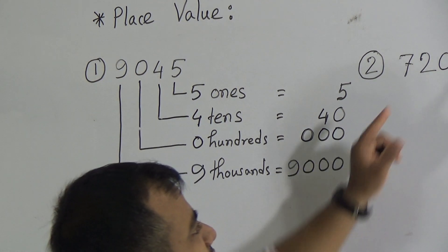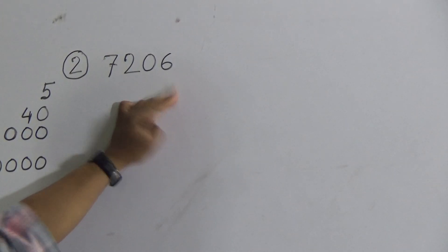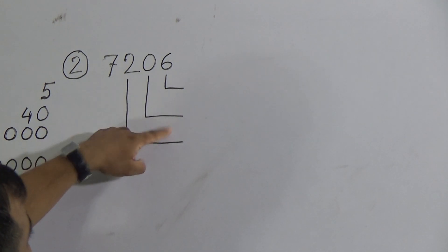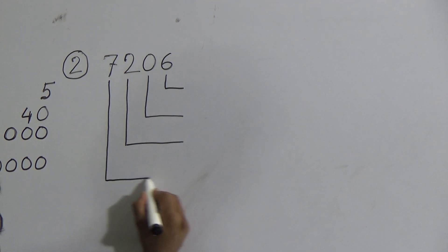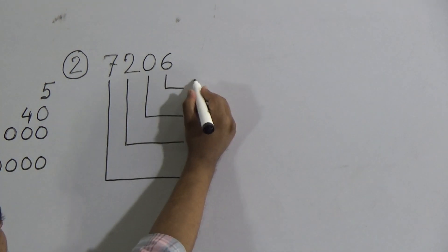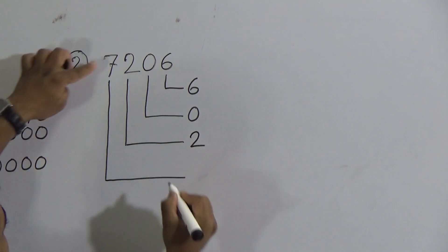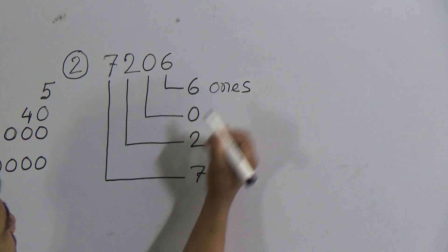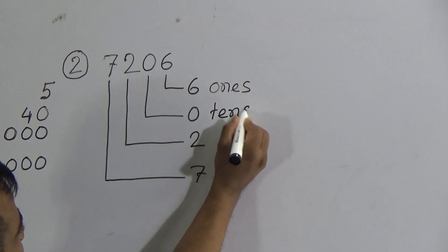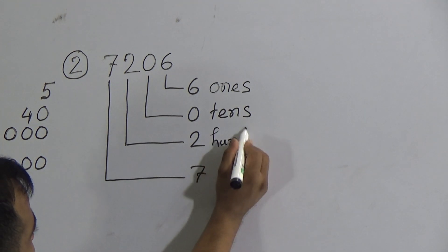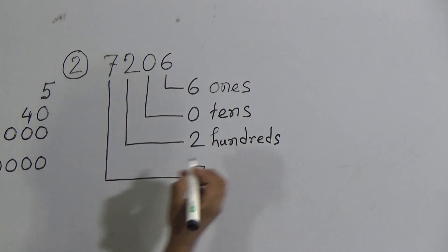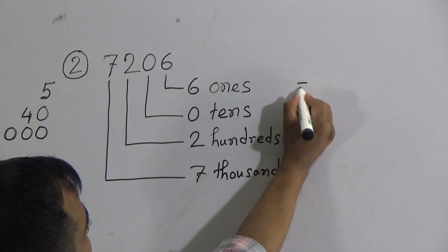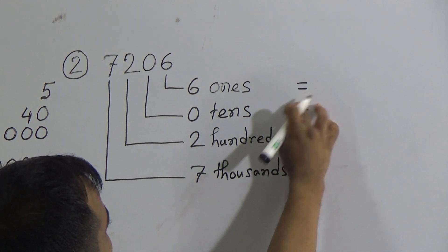Now the second problem: seven thousand two hundred and six, written as 7206. Draw the lines with proper gaps. Write the digits: 6, 0, 2, and 7. This six is in the ones place — write 'ones'. Zero is in the tens place — write 'tens'. Two is in the hundreds place — write 'hundreds'. Seven is in the thousands place — write 'thousands'. Then give the equal signs.